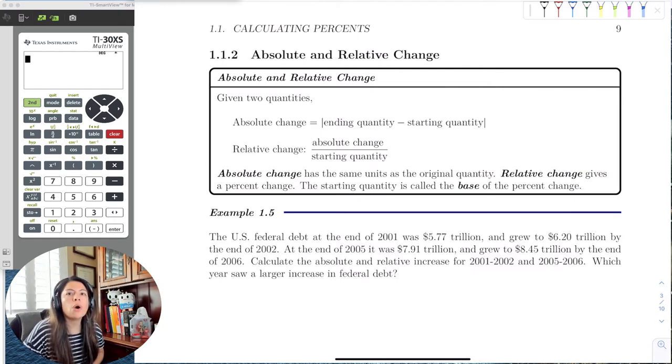And we always start, again, our base amount is always going to be the starting amount or the initial amount given in the problem. So let me go ahead and write that out. So absolute change, again, is the same units as the original quantity, whereas relative change is a percent. So it has no units.